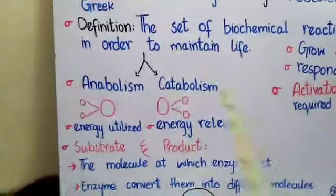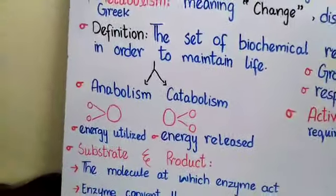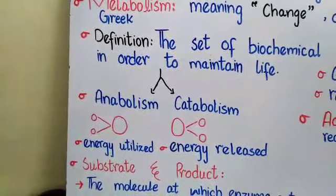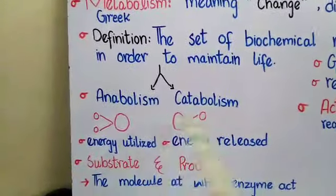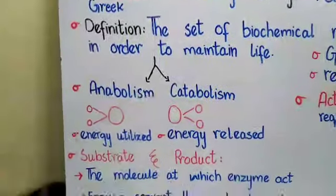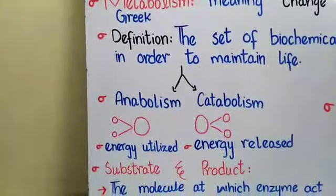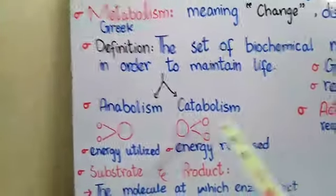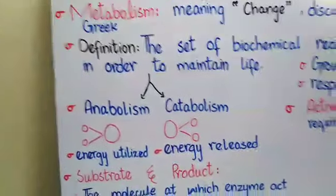An important short question — which appeared in the Lahore Board exam in 2016 — is: what is the difference between anabolism and catabolism? You write the definitions side by side with a line in the center, noting that in anabolism energy is used, while in catabolism energy is released. Examples: anabolism — photosynthesis; catabolism — respiration or glycolysis.